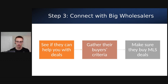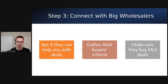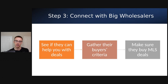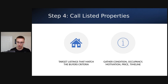When you connect with these big wholesalers, you pretty much want to find out three things. You want to see if they can help you with deals — either helping you lock up properties when you come across them, or helping you sell the deals when you lock them up. You want to gather their buyers' criteria: where their buyers are buying, what type of properties their buyers are buying, and the percentage of ARV or formula the buyers are using when buying. You also want to figure out if they're buying deals that are listed on the MLS, because we're going to be going after listed properties.